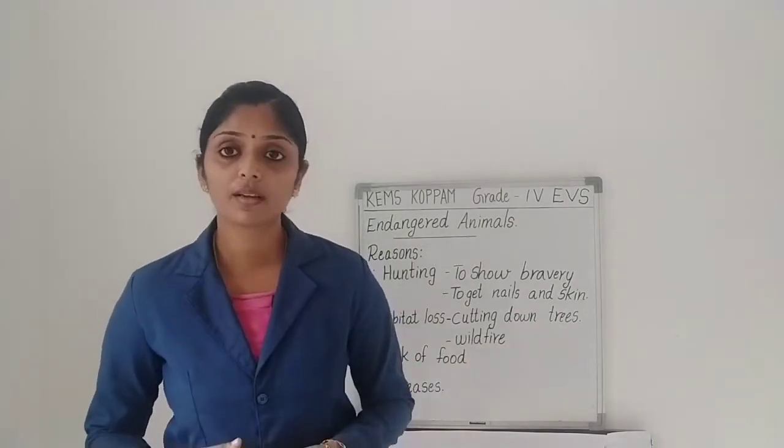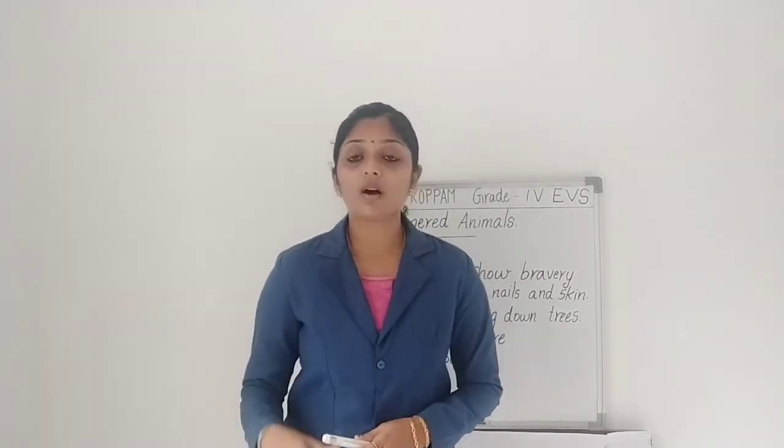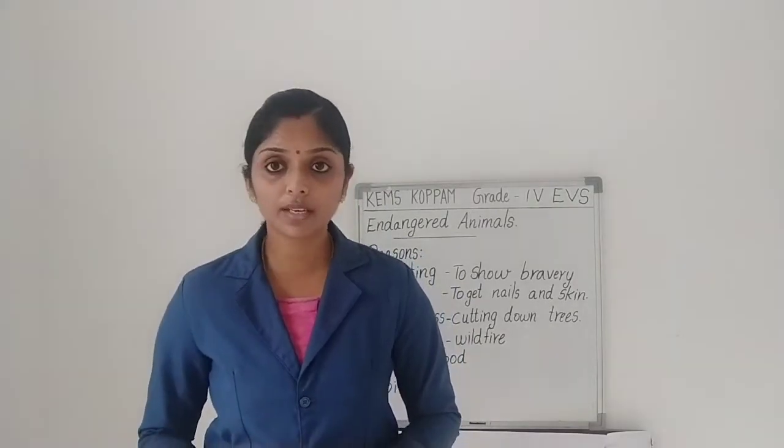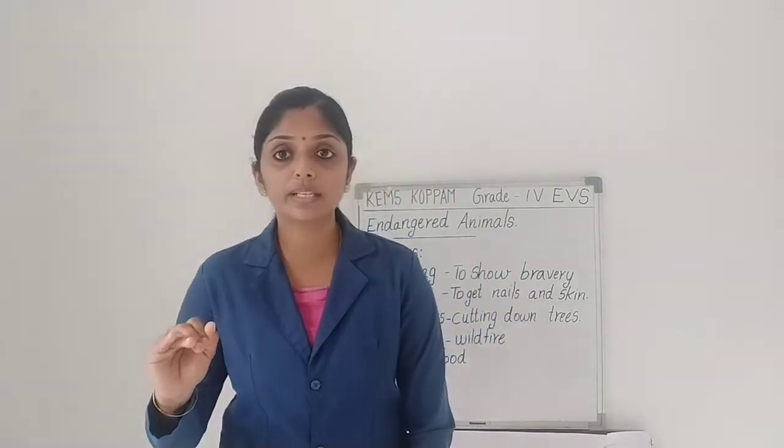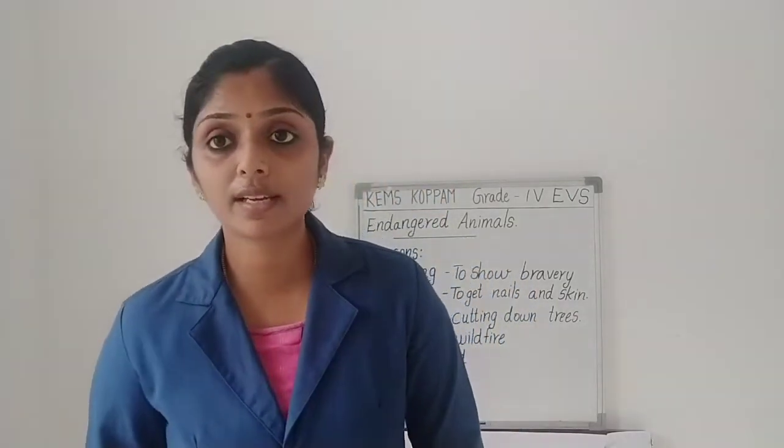So what we discussed — we discussed the reasons why the number of some animals is going down. First reason: hunting. Why are humans hunting? To get skin and nails and to show their bravery. Next: habitat destruction. How are they losing their habitat? Humans are cutting down trees and by wildfire — these are the causes of habitat destruction.